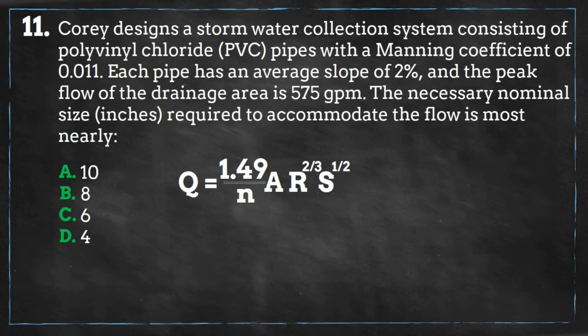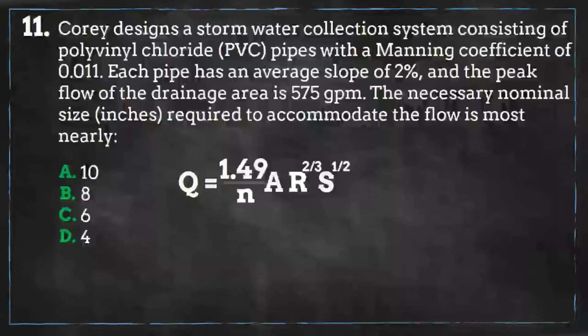The Manning equation for U.S. units is as follows: Q is the volumetric flow rate, n is the Manning coefficient, A is the flow's cross-sectional area, R is the hydraulic radius which is the area divided by the wetted perimeter — for full circular pipes it will be the diameter divided by 4 — and S is the bottom slope of the channel.